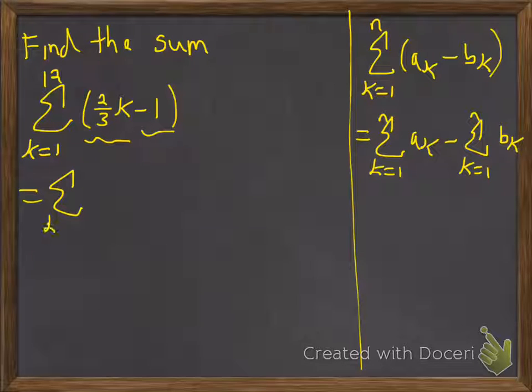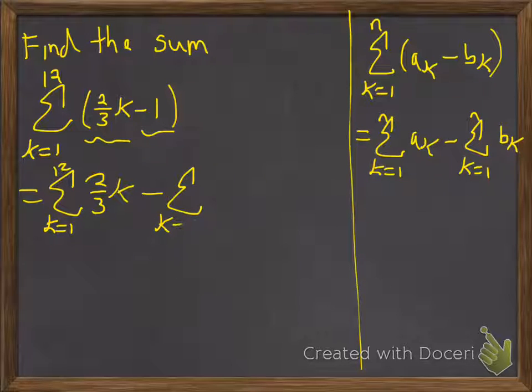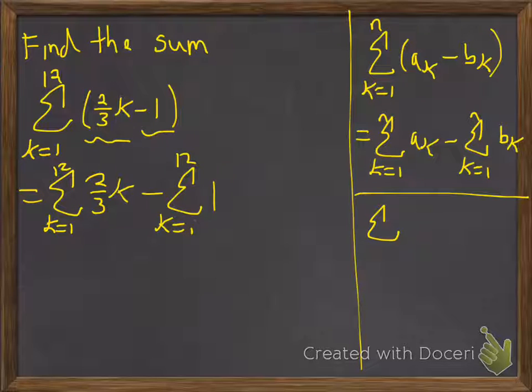So we'll go ahead and do that with our example here. k equals 1 to 12, 2/3 k minus k equals 1 to 12 of just the singleton 1. Okay.